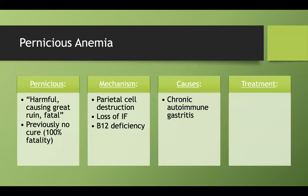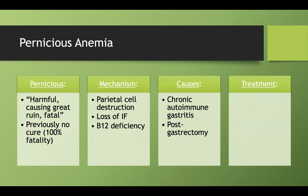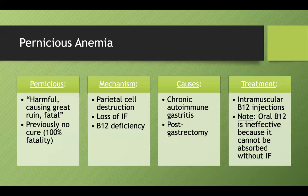Pernicious anemia can be caused by a few things. Right now we're talking about chronic autoimmune gastritis — without parietal cells, you have no intrinsic factor. Another cause is post-gastrectomy: if part of your stomach is removed, you take parietal cells with it and may lack sufficient intrinsic factor. Treatment requires intramuscular B12 injections. You can give as much oral B12 as you want, but it won't be adequately absorbed without intrinsic factor. On tests, think of pernicious anemia as absolute zero intrinsic factor — IM B12 injections is the correct answer.